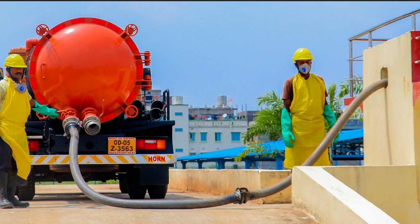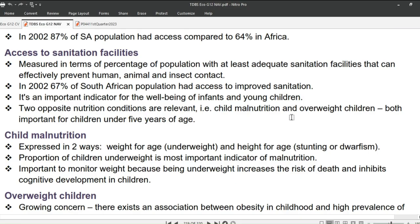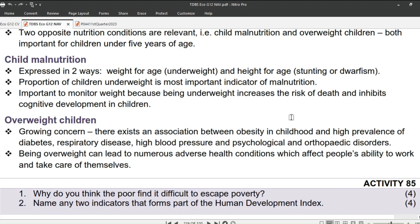Access to sanitation facilities is measured as the percentage of the population with at least adequate sanitation facilities that can effectively prevent human, animal, and insect contact. In 2002, 67% of the South African population had access to improved sanitation — an important indicator for the well-being of infants and young children. Two opposite nutrition conditions are relevant: child malnutrition and overweight children, both important for children under 5 years of age.